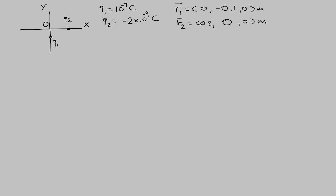Let's say that we have charge Q1 on the negative y-axis with a charge of 10 to the minus 9 coulombs and a position of (0, −0.1, 0) meters. We have charge Q2 on the positive x-axis. Charge Q2 is minus 2 times 10 to the minus 9 coulombs, and the position vector of charge Q2 is (0.2, 0, 0) meters.